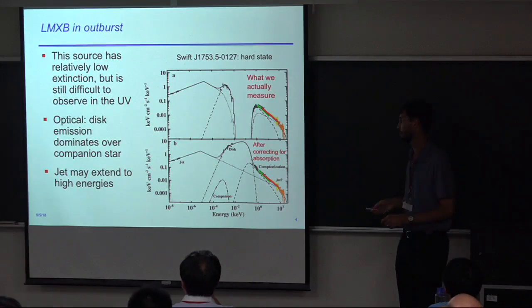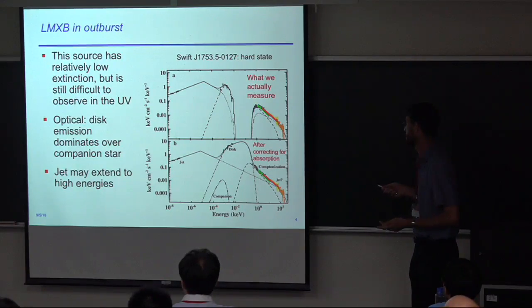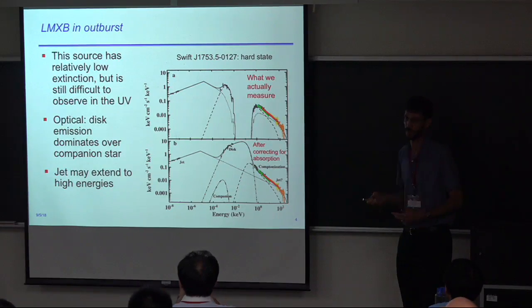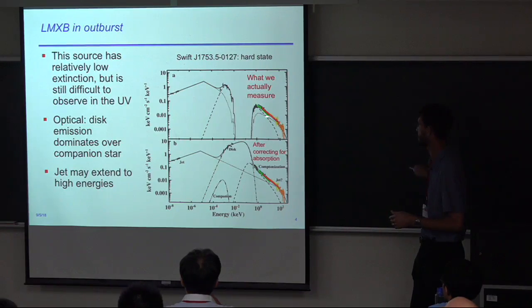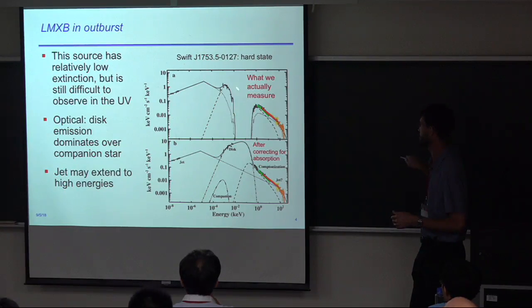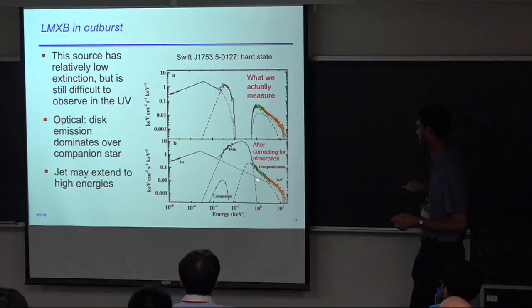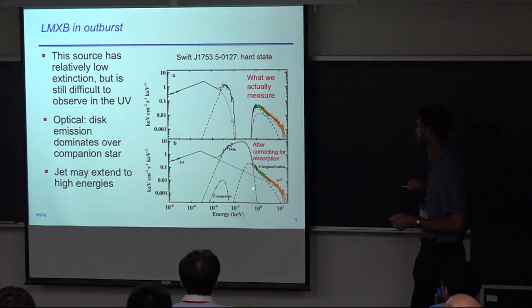Now, low-mass X-ray binaries in outburst. This shows an example of a low-mass X-ray binary. The extinction is actually pretty low for this source, but because it's close to the plane, we see a high level of absorption in the UV. We can measure well in the radio, optical, infrared, and X-ray, but once you get into soft X-rays and the UV it's really a hard regime to observe in. What we measure for this source is shown here, and after correcting for absorption we have a jet component here, a disk component here, and then the X-ray Compton component.